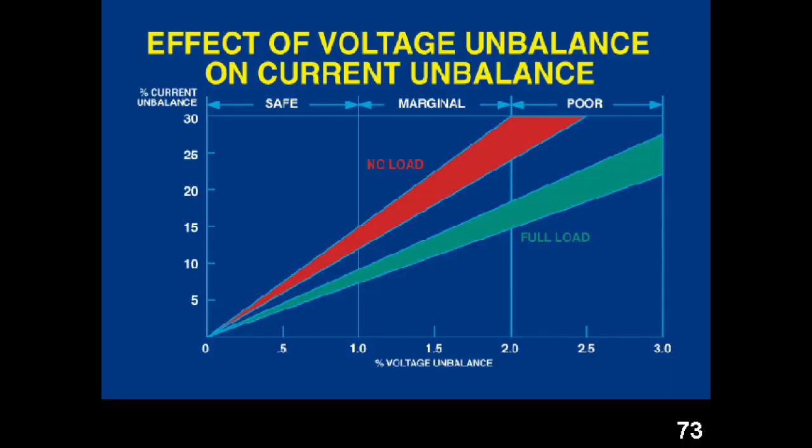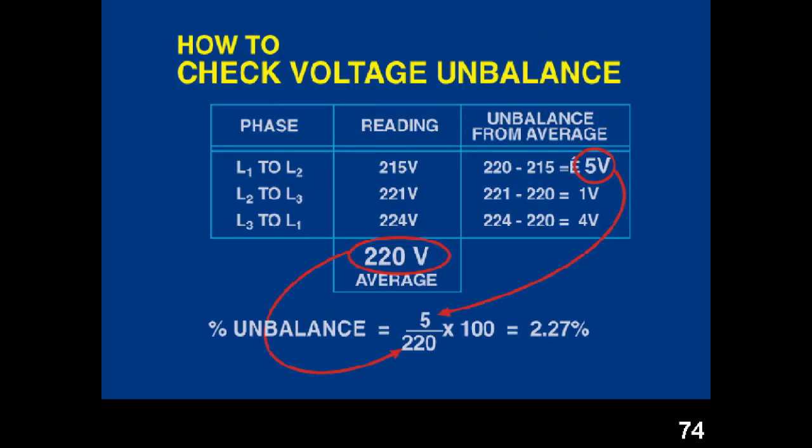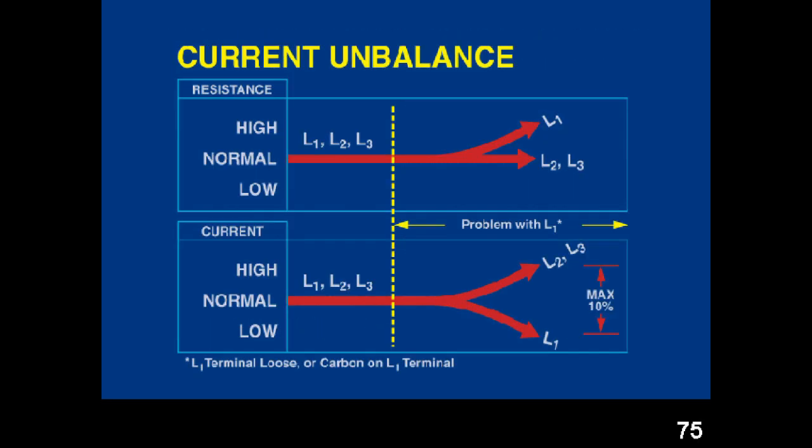Electrical problems include: 1. Voltage unbalance, and 2. Current unbalance. The calculation method for current and voltage unbalance and why it happens will be explained in the next tutorial. Please subscribe to us at UA Technical Solutions.